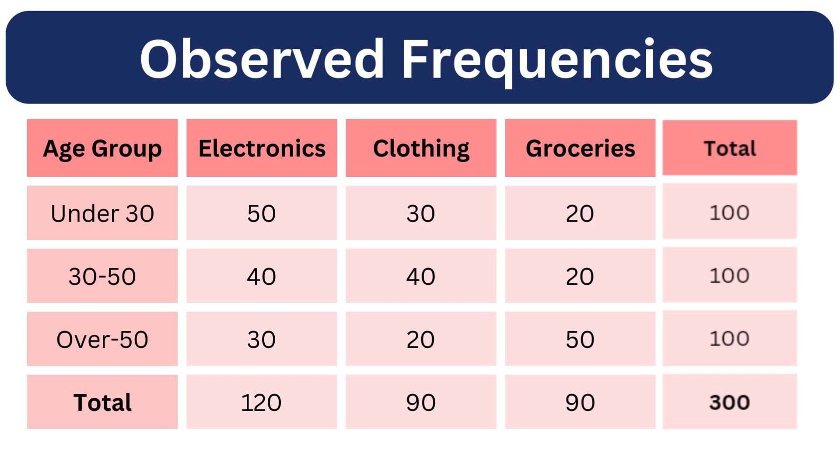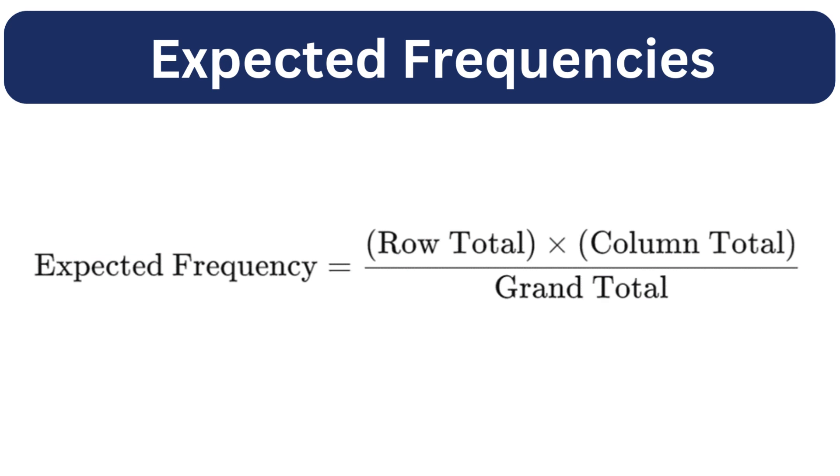The formula to calculate the expected frequency is: row total multiplied by column total, divided by the grand total, or the total number of values in the data set.